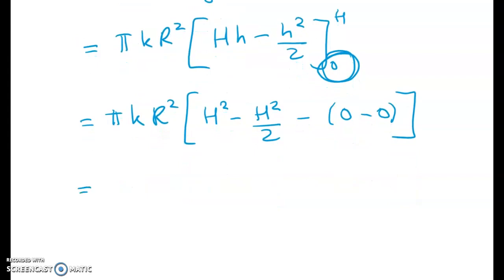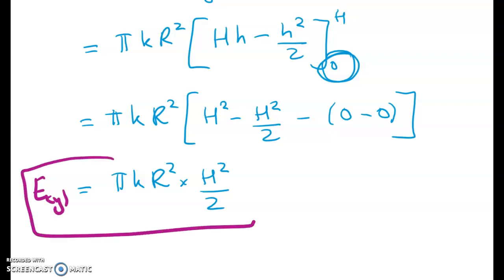So cleaning this up we get pi k big R squared times H squared times H squared on two. We're just going to leave that for now and we're going to call that E for the cylinder. So that's how much energy it takes to empty that cylinder.